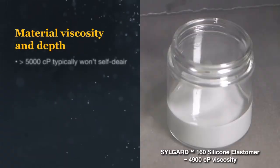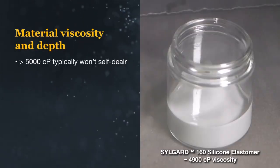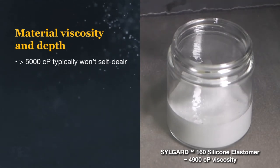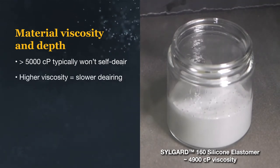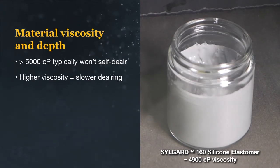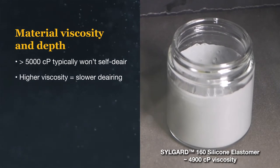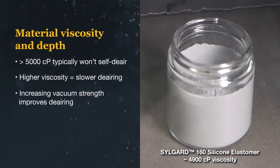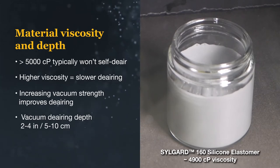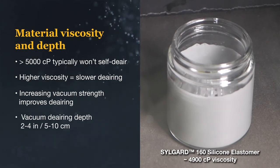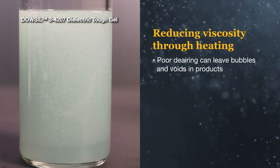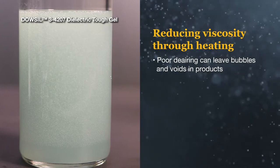Products with viscosities above 5,000 centipoise will not self-de-air, so vacuum de-airing is necessary. This process will also be slower due to the higher viscosity, making it more difficult for the vacuum to pull the air from the system. This can be sped up with a stronger vacuum, but de-airing will only be effective to a depth of about 5 to 10 centimeters. If the de-airing rate is too low or the depth of material too large, bubbles can remain in the cured product.